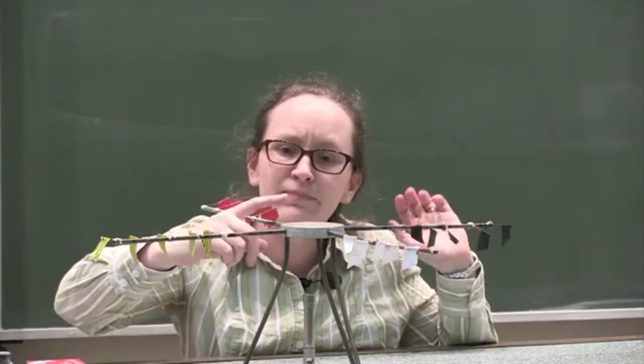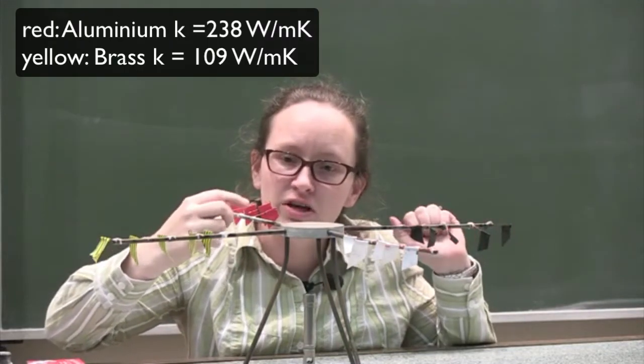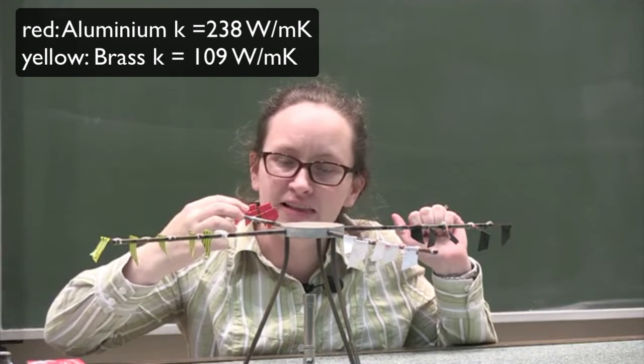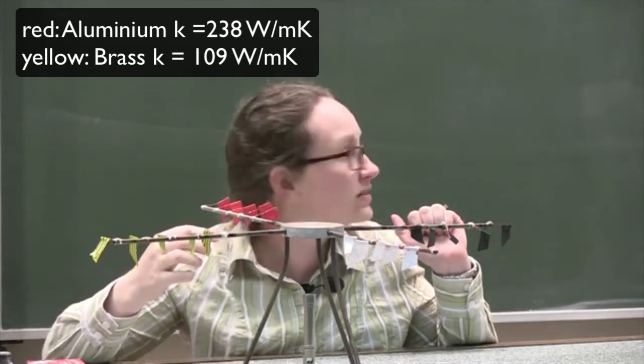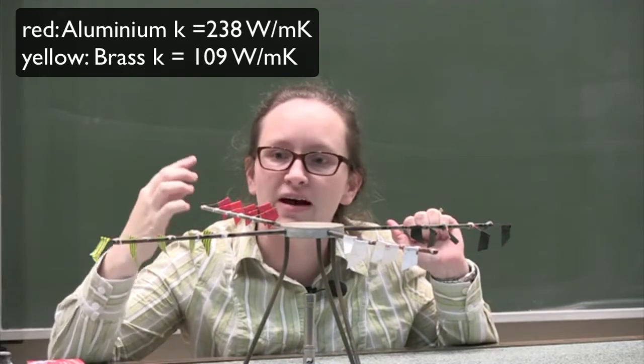What we're going to look at now is a demonstration showing the different thermal conductivities of different metals. So what we have here is aluminium with the red flags attached. The thermal conductivity of aluminium is 238 watts per meter per Kelvin.